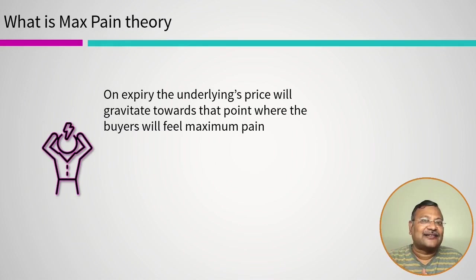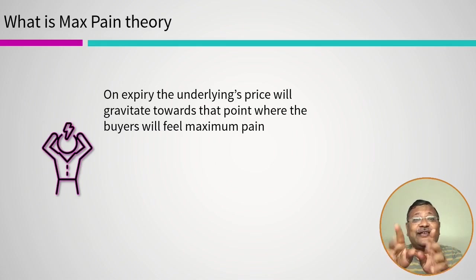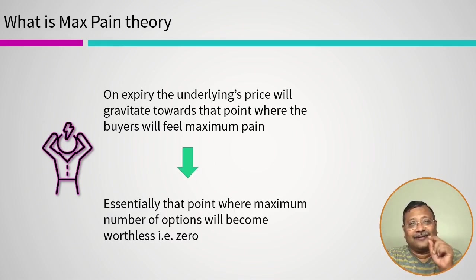Since on expiry there is no time value, the maximum loss or maximum pain that the buyer will feel is when the options he holds expire at zero value — essentially that point where the maximum number of options become worthless.